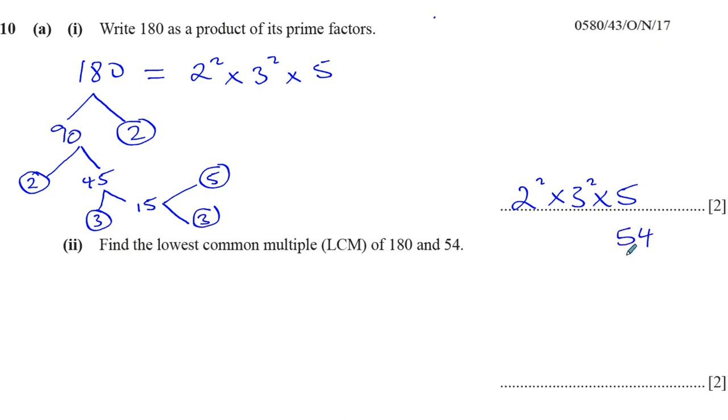54 can be split up into 2 times 27, and 27 splits up into 3 times 9, and of course 9 splits up into 3 times 3. So we end up with 54 is equal to 2 times 3 cubed, which of course that's 27 times 2, which is 54, which makes sense.